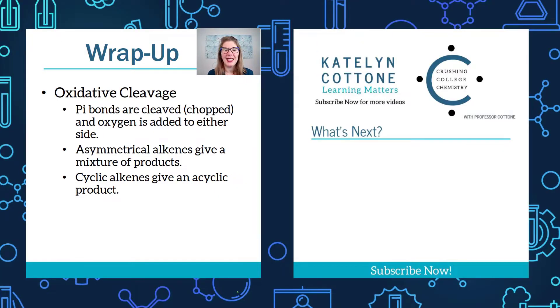Let's wrap up. In this video, we looked at a reaction called oxidative cleavage. In the oxidative cleavage reaction, you have an alkene where the pi bond is chopped and oxygen is added to either side. If you have a symmetrical alkene, you get two of the same product. But if you have an asymmetrical alkene, you get a mixture of products. The really interesting example we looked at was when you start with a cyclic alkene and you get one product at the end that has two C double bond O groups in it, called a carbonyl. Thanks so much for your attention. This is Katoni signing out.